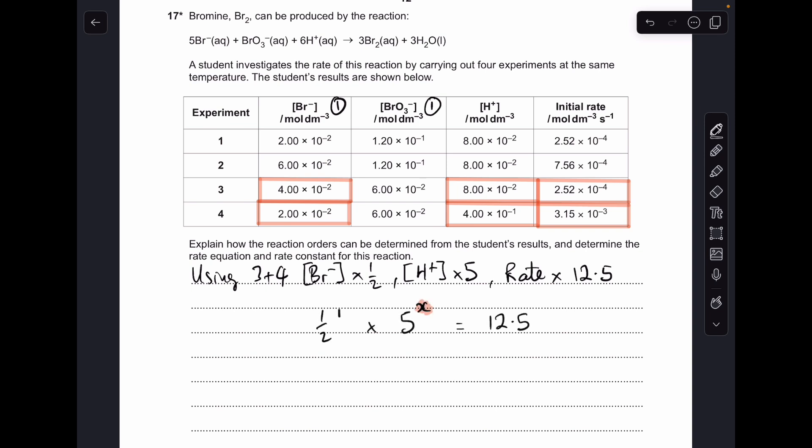So we're going to tackle this exactly the same way as the previous one. So basically, what power does that x need to be? Well, it needs to be a two, because a half to the power one multiplied by five squared does give that overall rate change of twelve and a half. So that means the order with respect to H+ ions is two.